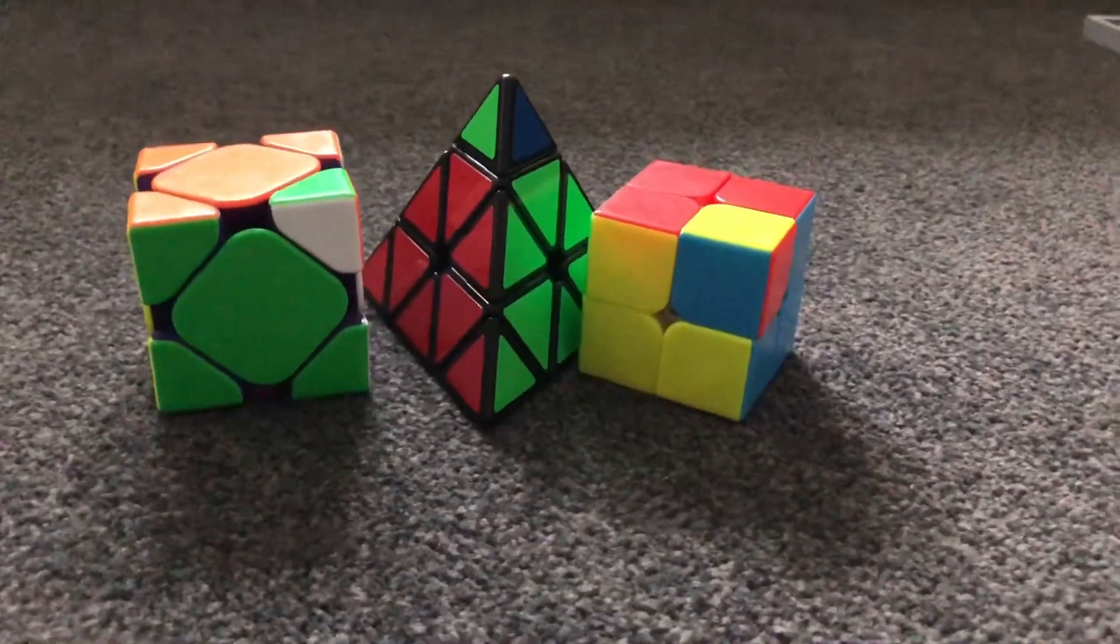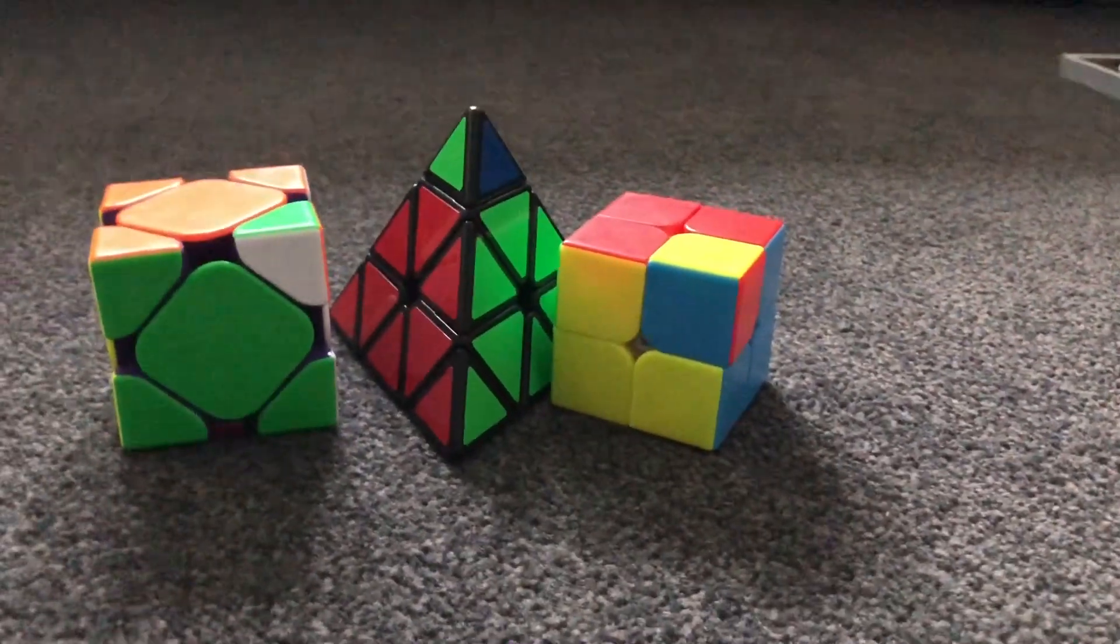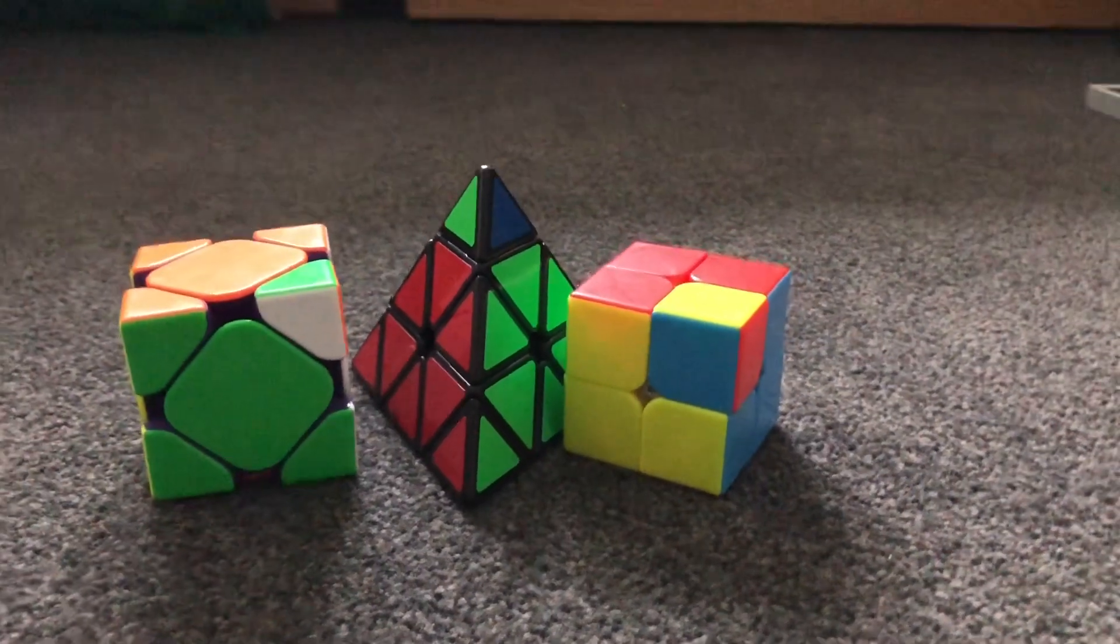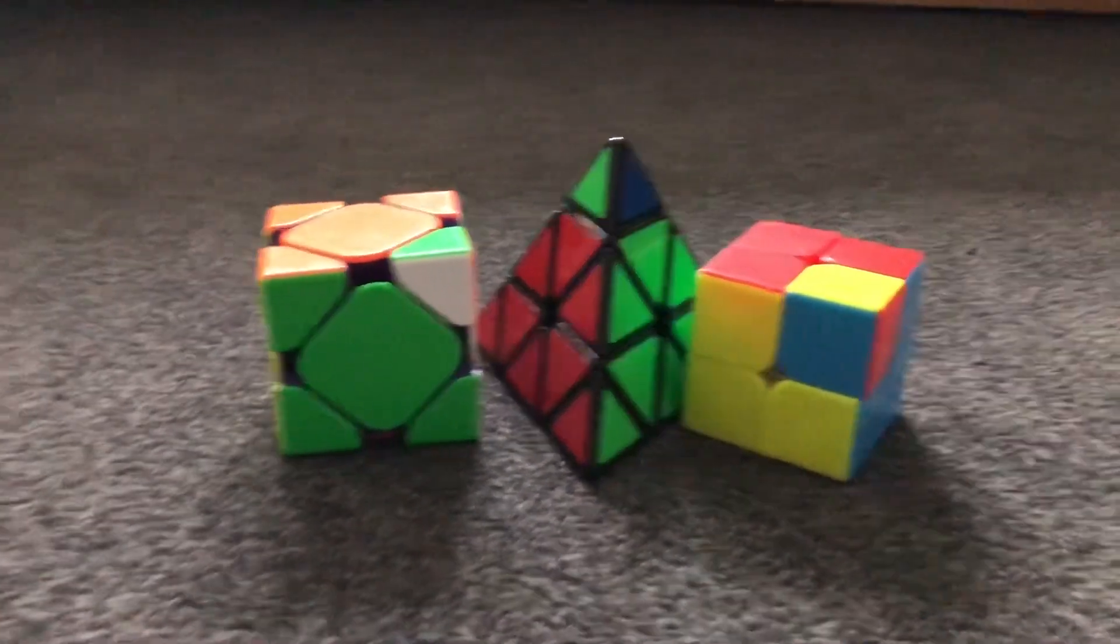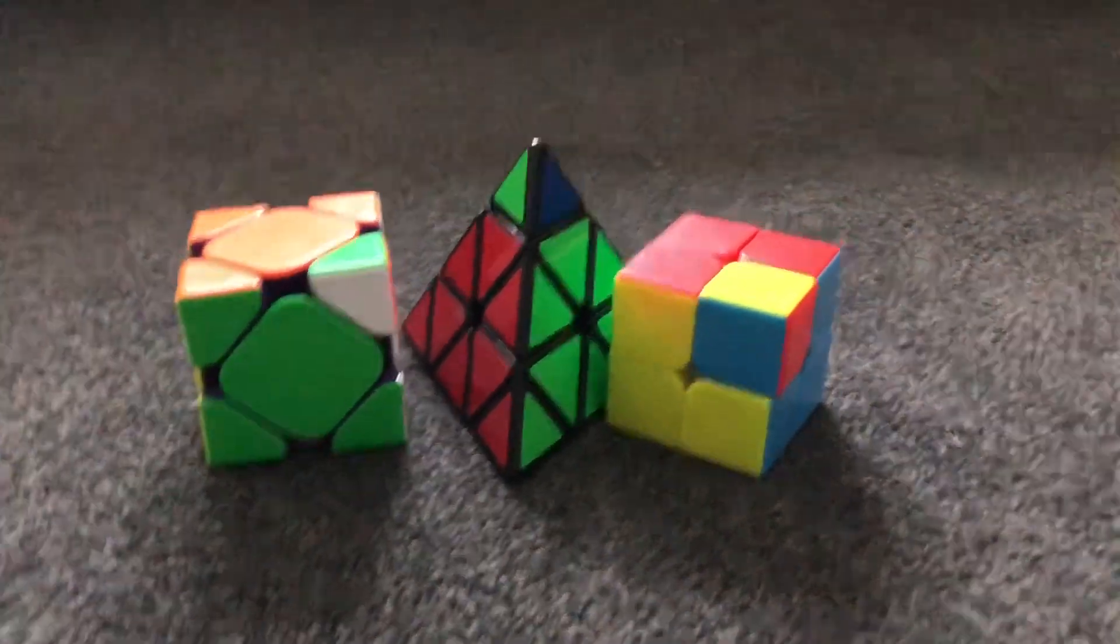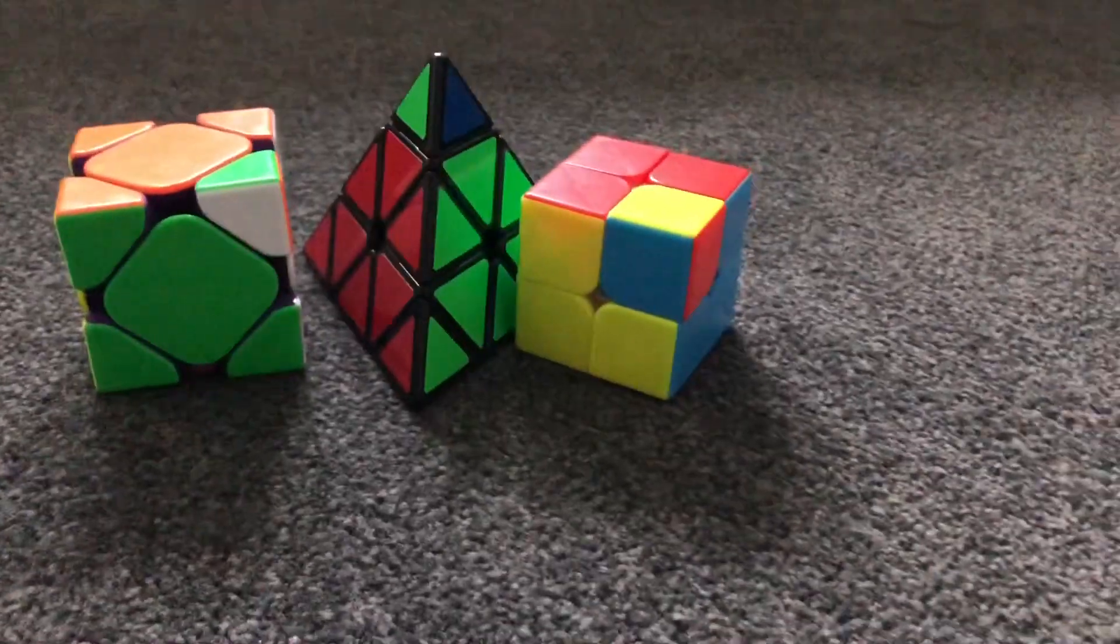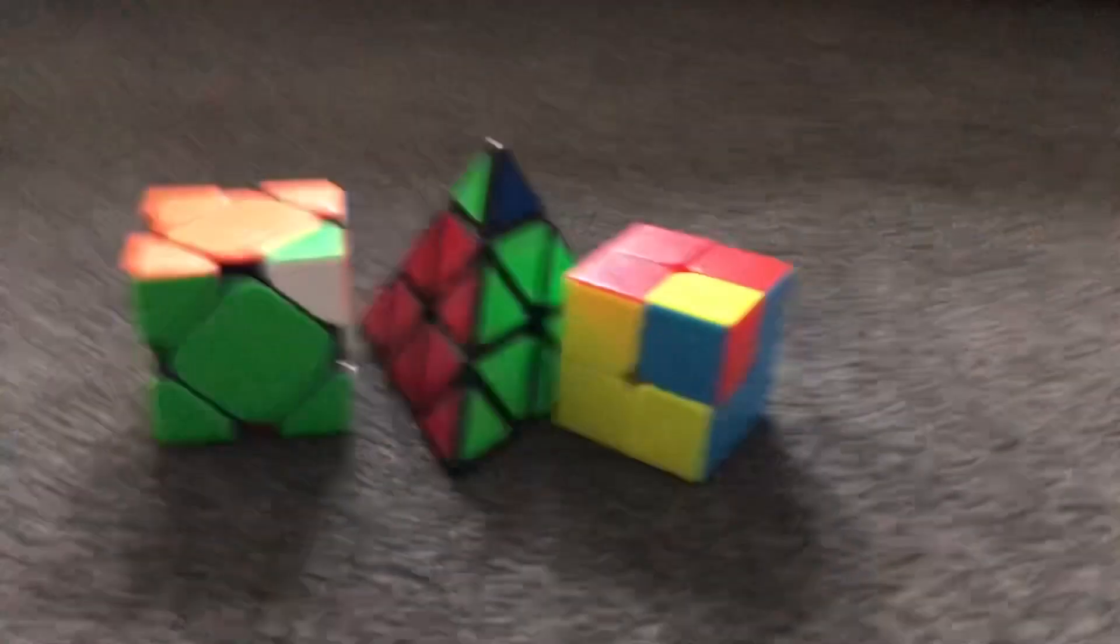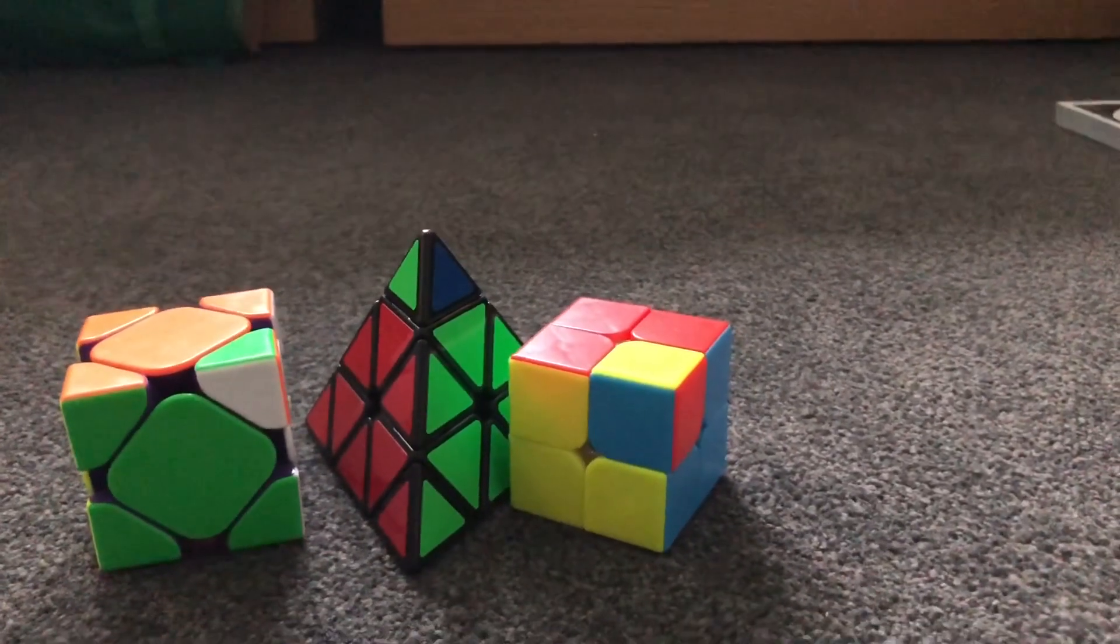Hey guys, it's QMAC72 here. This is part two of the competition. For the rounds that I got into, I got into Skewb, Pyraminx and 2x2 - second round for each of them. So let's get into it.